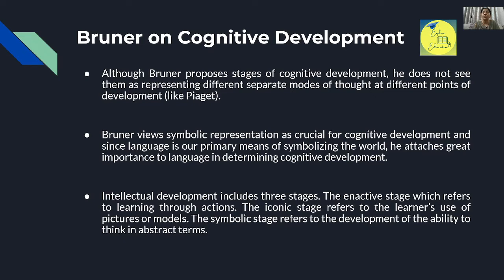The three stages are: first, the enactive stage, which refers to learning through actions — similar to Piaget's sensory motor stage where motor activity occurs and the child learns by doing. Second, the iconic stage, which refers to the learner's use of pictures or models — children who are a little older learn more easily when things are shown to them in picture or colorful pictorial form. Third, the symbolic stage, which refers to the development of the ability to think in abstract terms — similar to Piaget's formal operational stage. At this highest stage, the child can think in abstract form.